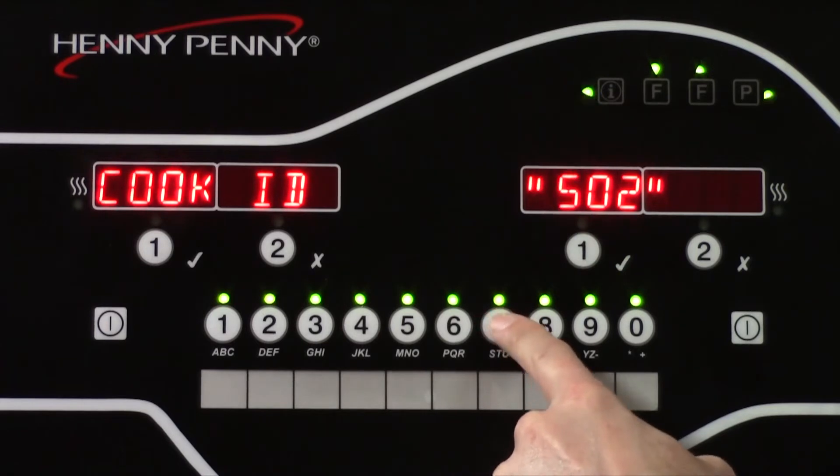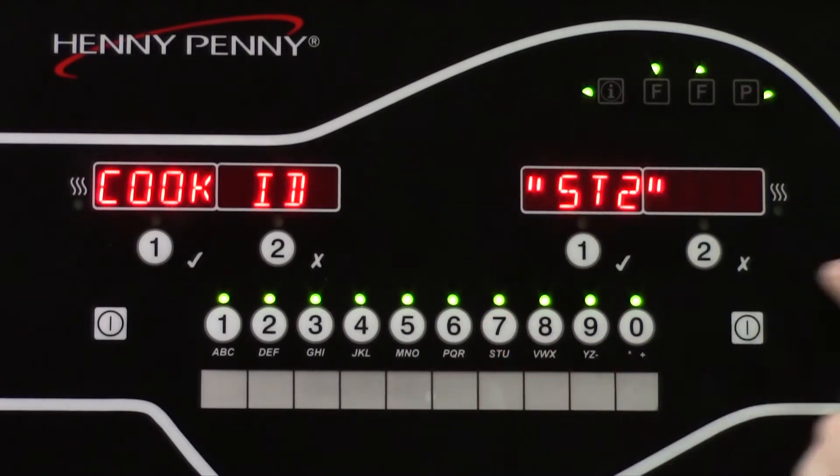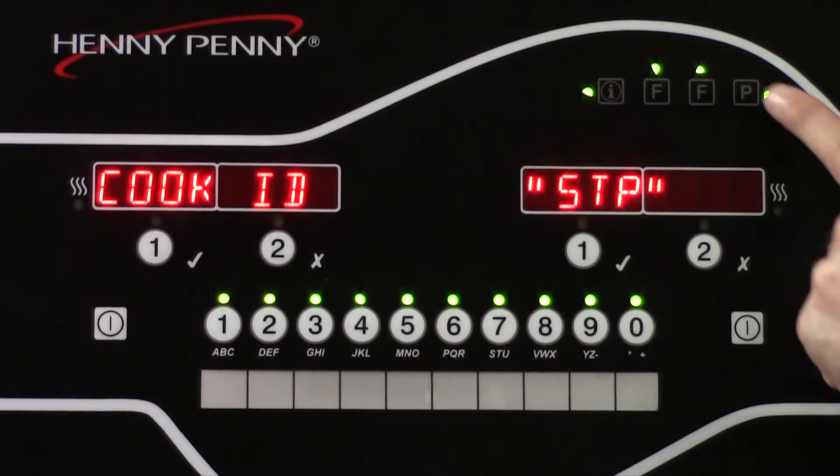The cook ID is a three-letter abbreviation that appears in the three-digit timer display. For our example, we are going to set this to STP, abbreviation for strips.